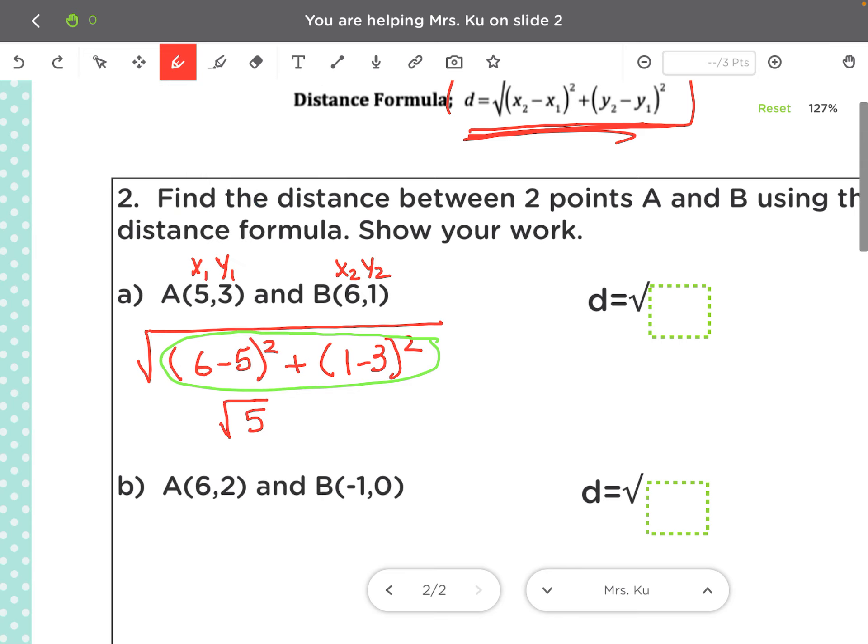But remember, we haven't done anything with the square root yet, so your answer should be the square root of 5. Notice here, I already have the square root symbol here for you. You just have to figure out that that number is 5.